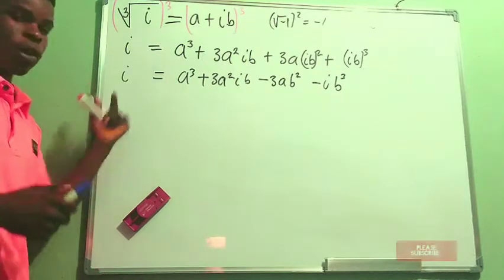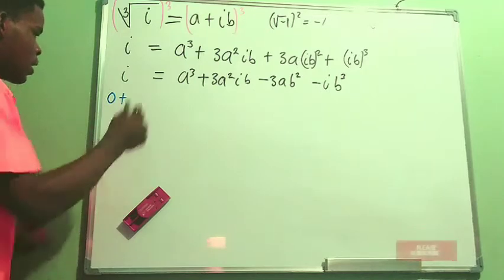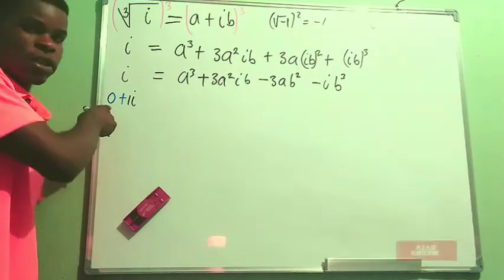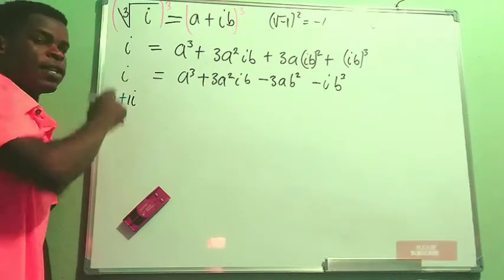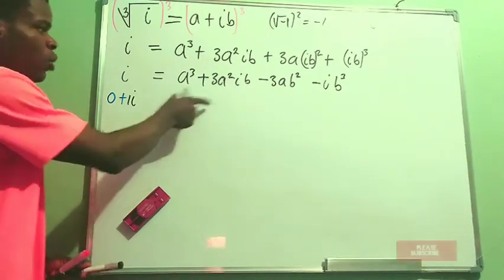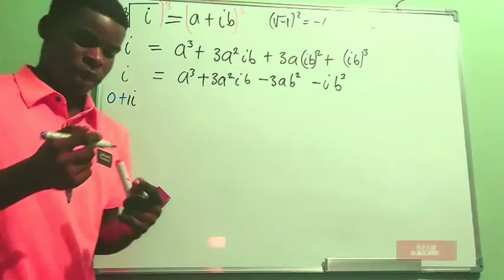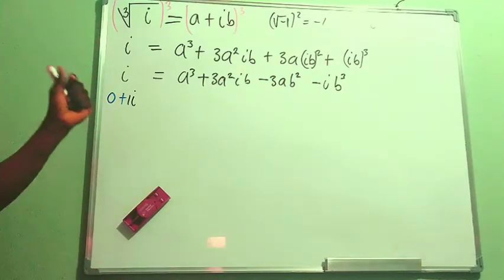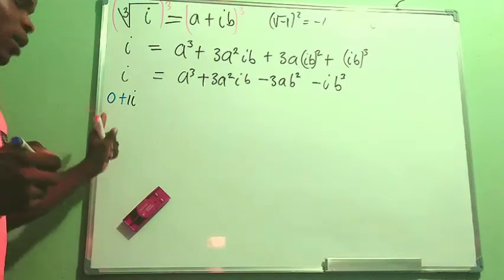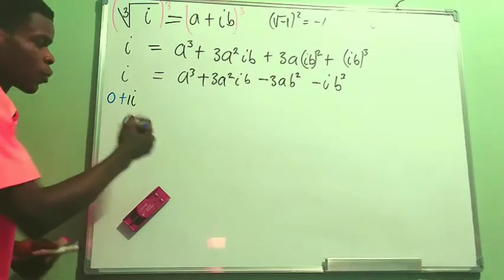Since the left-hand side i is a complex number, we can write it as 0 + 1·i — the real part is zero and the imaginary coefficient is one. We equate real parts to real parts, and imaginary parts to imaginary parts. The real part is everything independent of i, and the imaginary part is the coefficient of i.